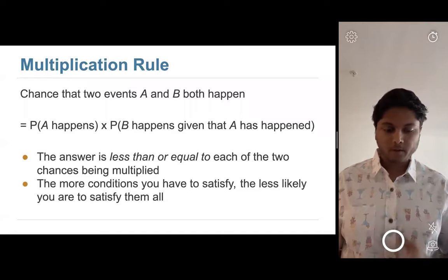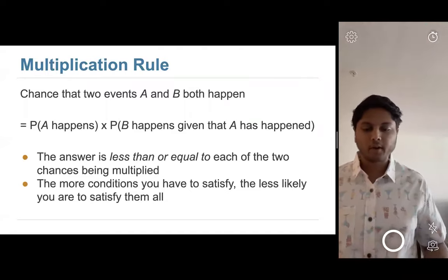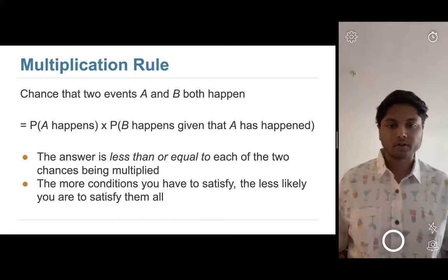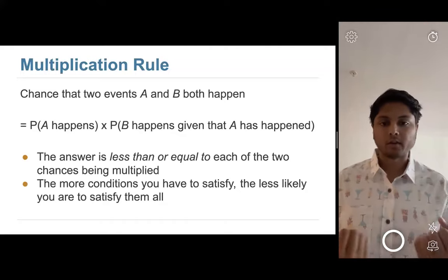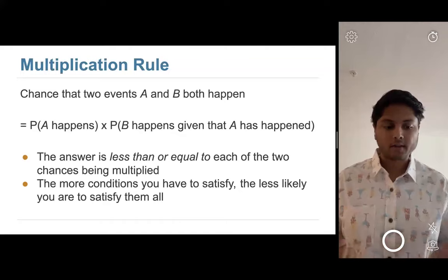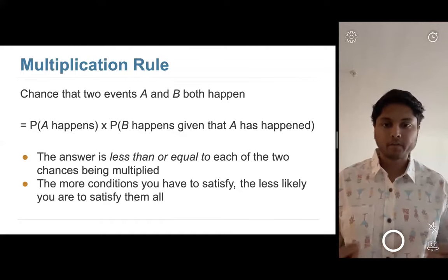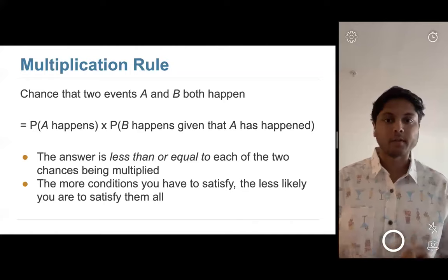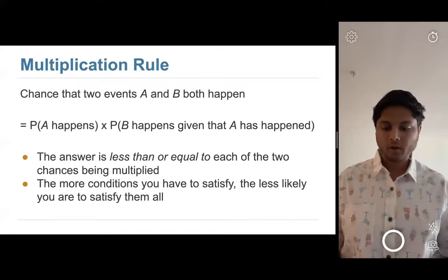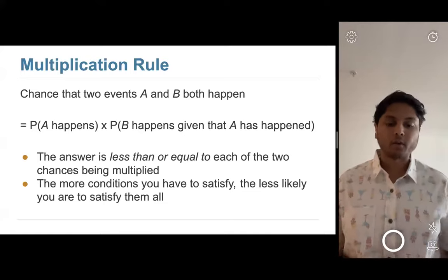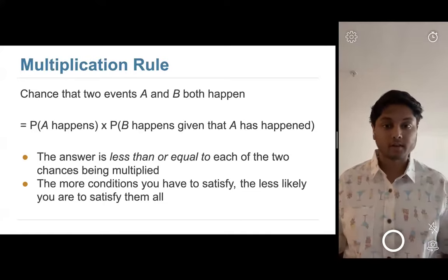One thing good to keep in mind about the multiplication rule: the answer should be less than or equal to each of the two things you're multiplying together, because probabilities are less than or equal to one. Intuitively, you're trying to satisfy more conditions, so you're less likely to satisfy them all.